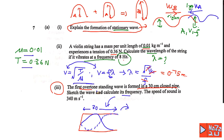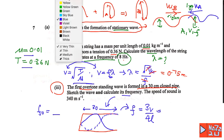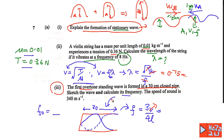For the first overtone of a closed pipe, the frequency equation is f = 3v / (4L). The speed of sound is 340 m/s and the pipe length is 30 cm = 0.30 m. Substituting these values, the frequency at the first overtone (second harmonic) is equal to 850 Hz.